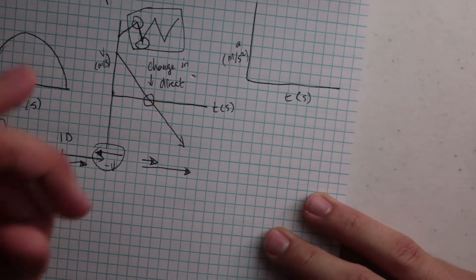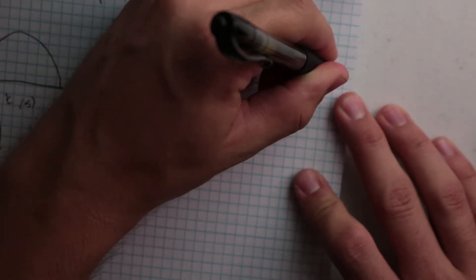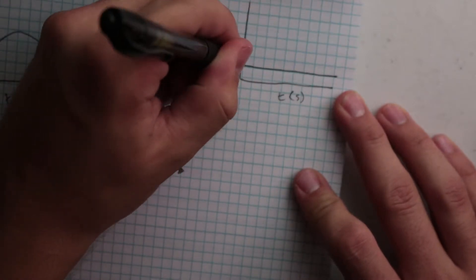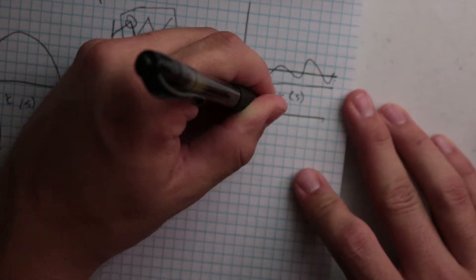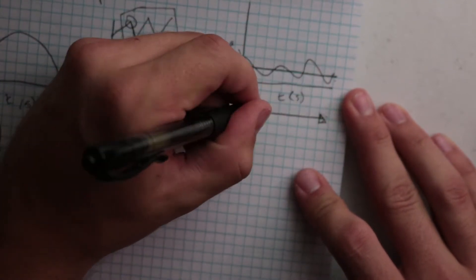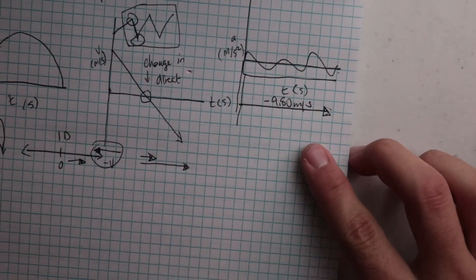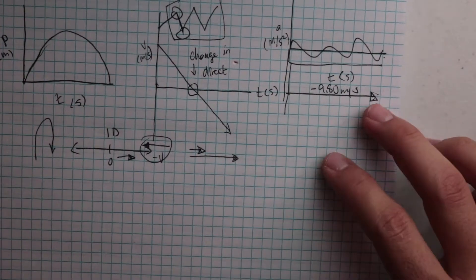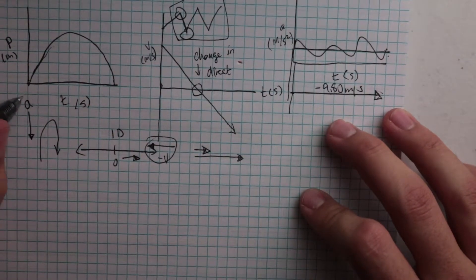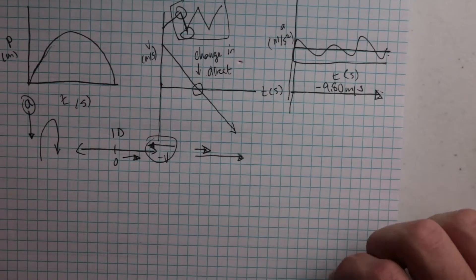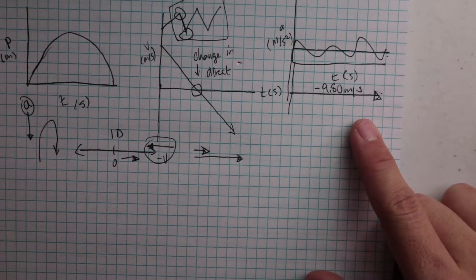I also want to look at the acceleration-time graph. This is going to be a line below the x-axis at negative 9.80 meters per second squared, if we're talking about the acceleration from gravity. That's because when I throw the ball up, after my hand releases it, the only force acting on the mass is the force from gravity, and this is a constant force.